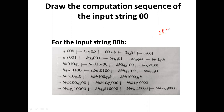In state q1 with input symbol zero, it will replace zero by zero and move to the q1 state, with the head moving to the right position. The current symbol is zero, so the corresponding ID has zero at the right position.